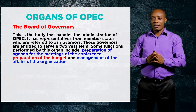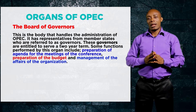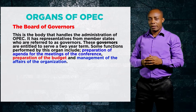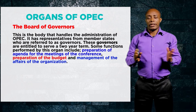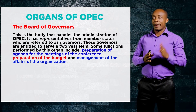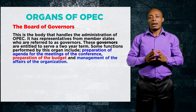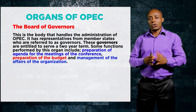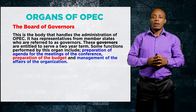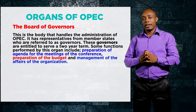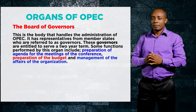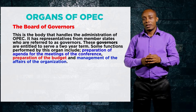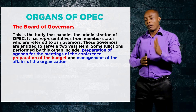The Board of Governors is the organ that handles the administration of OPEC. It has representatives from member states called Governors, who serve a two-year term. The Board's functions include preparation of the agenda for the Conference, preparation of the budget, and management of the affairs of the organization.